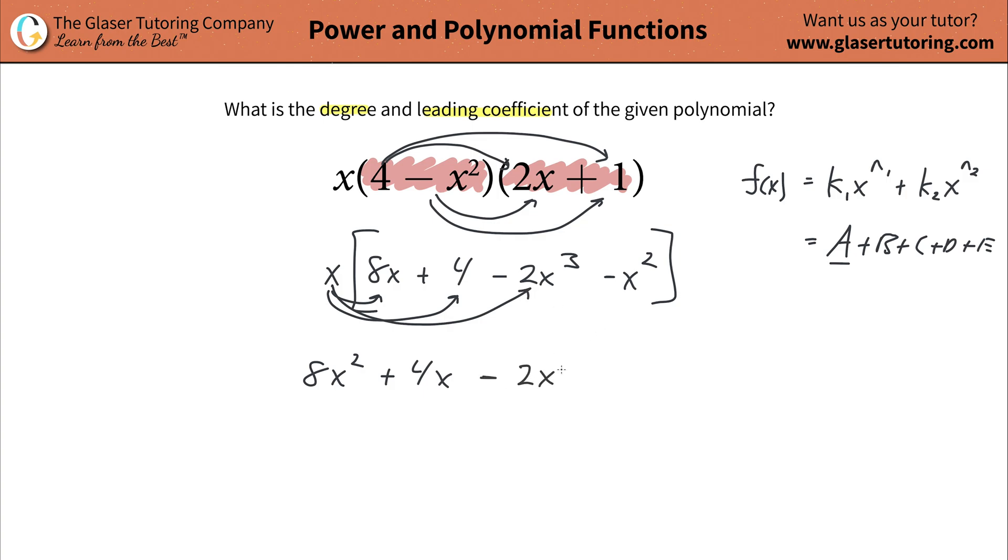Negative then 2x to the fourth. And then take the x and multiply it by that term. That's going to be negative then x cubed. Let's move this down a touch.